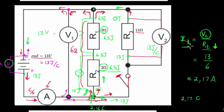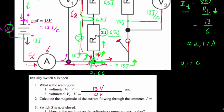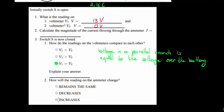Since current is inversely proportional to resistance, if total resistance decreases, total current increases. There are now more paths for coulombs to travel through, meaning less overall resistance. So the ammeter reading will increase when the switch is closed because total resistance decreases when a parallel branch is added.